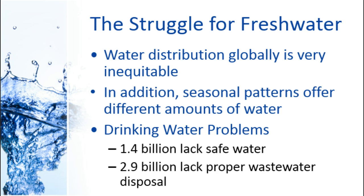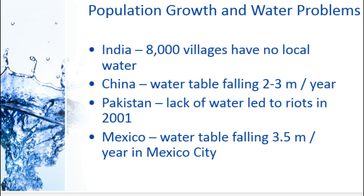One thing that's important to recognize is we only have so much fresh water on Earth and it's not evenly distributed, so some countries have more than others, some continents have more than others. Seasonal patterns are going to differ and change the amount of water, and the interior of continents are going to have very different weather patterns than the coastlines. When we think about drinking water, there's a huge number of people who really don't have good access to it throughout the world.